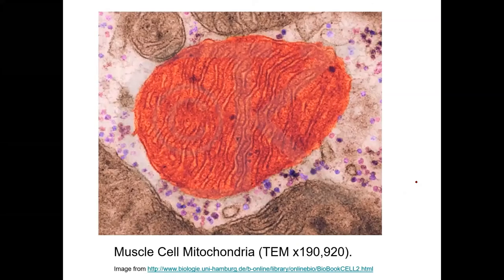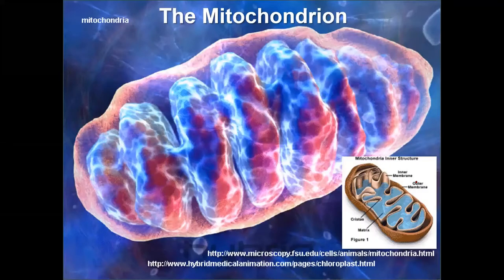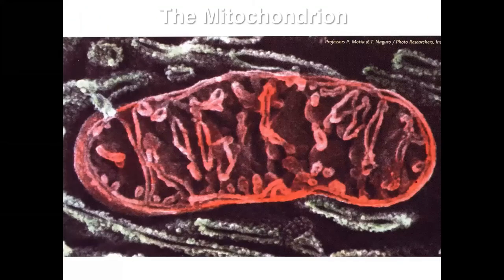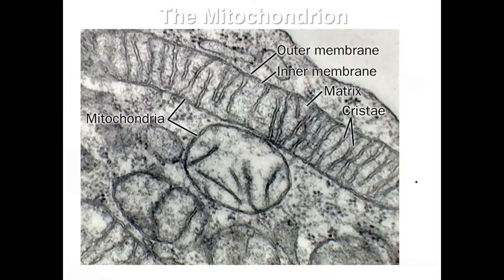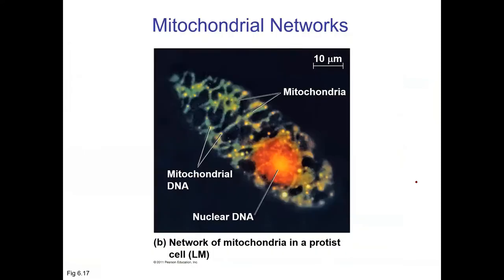There are electron micrographs showing mitochondria — some showing three dimensions and cross sections. Mitochondria aren't always bean-shaped; research is showing they can actually fuse together and form networks. There's a picture showing mitochondria connected in these networks, which is pretty cool.